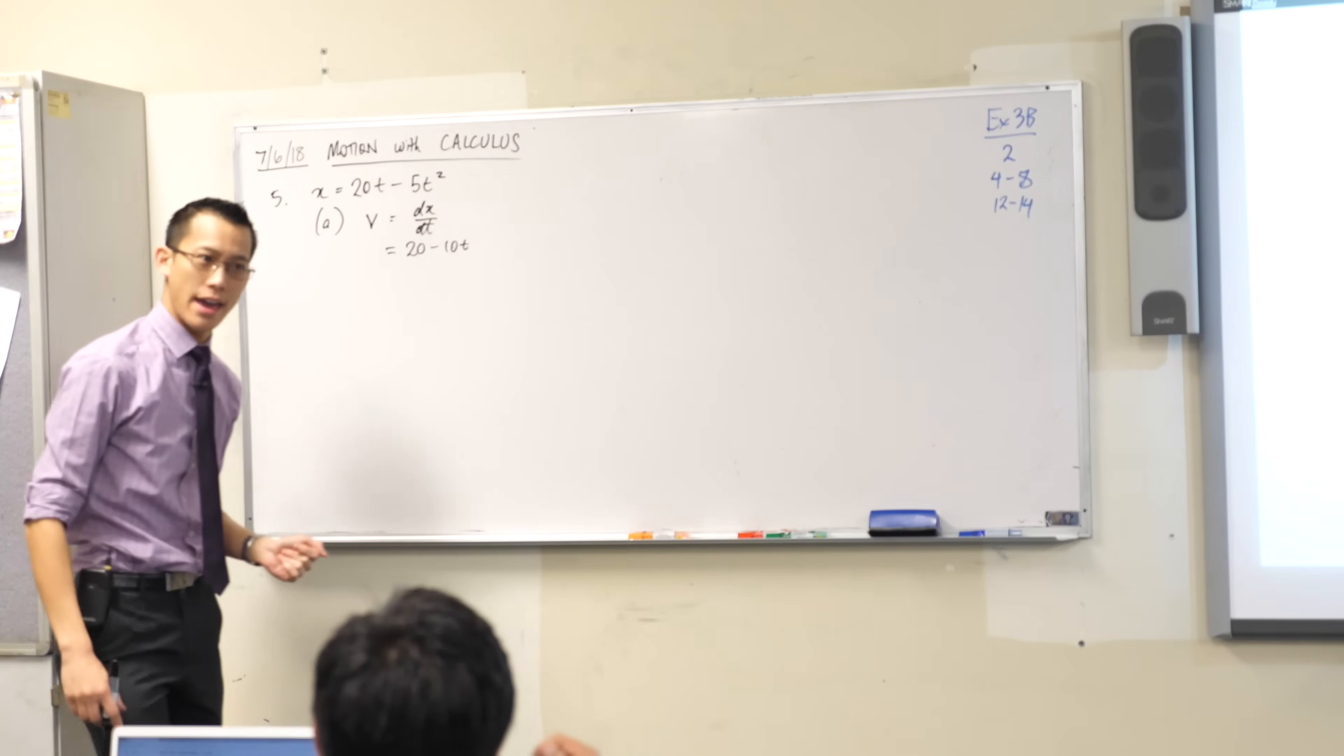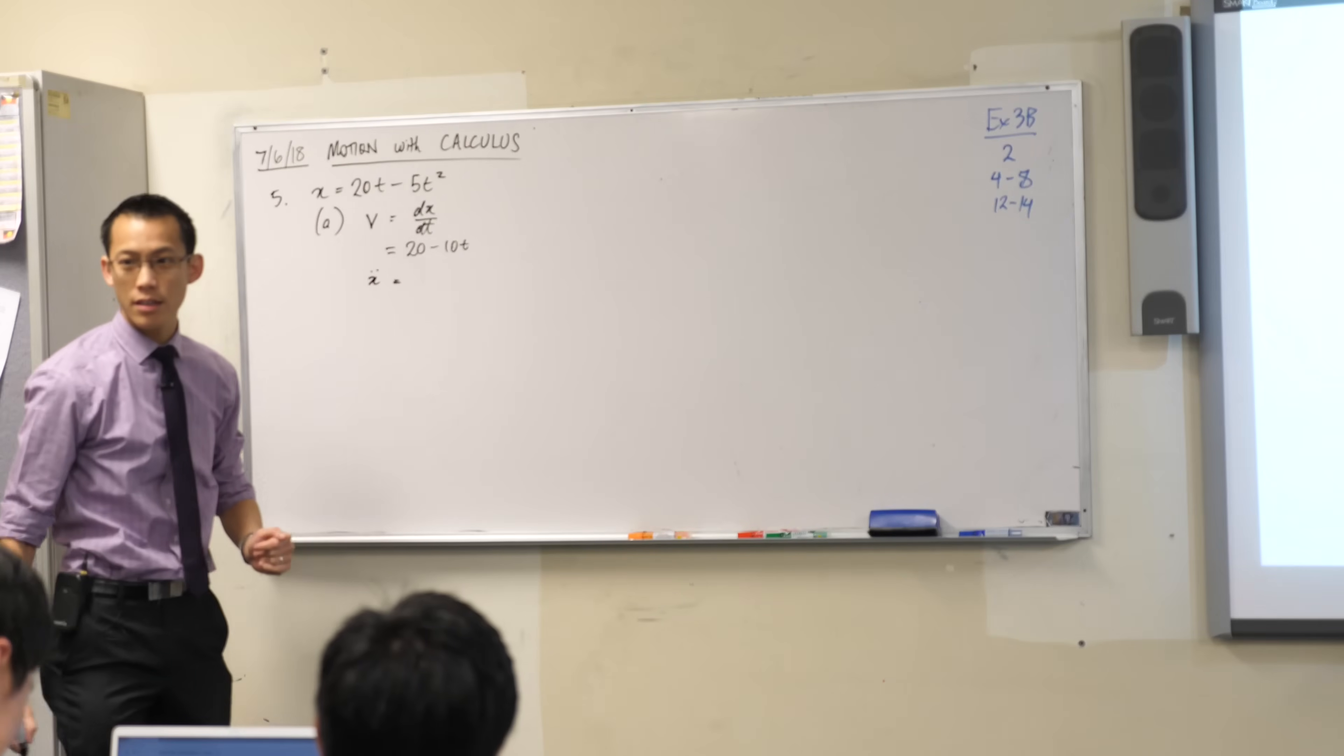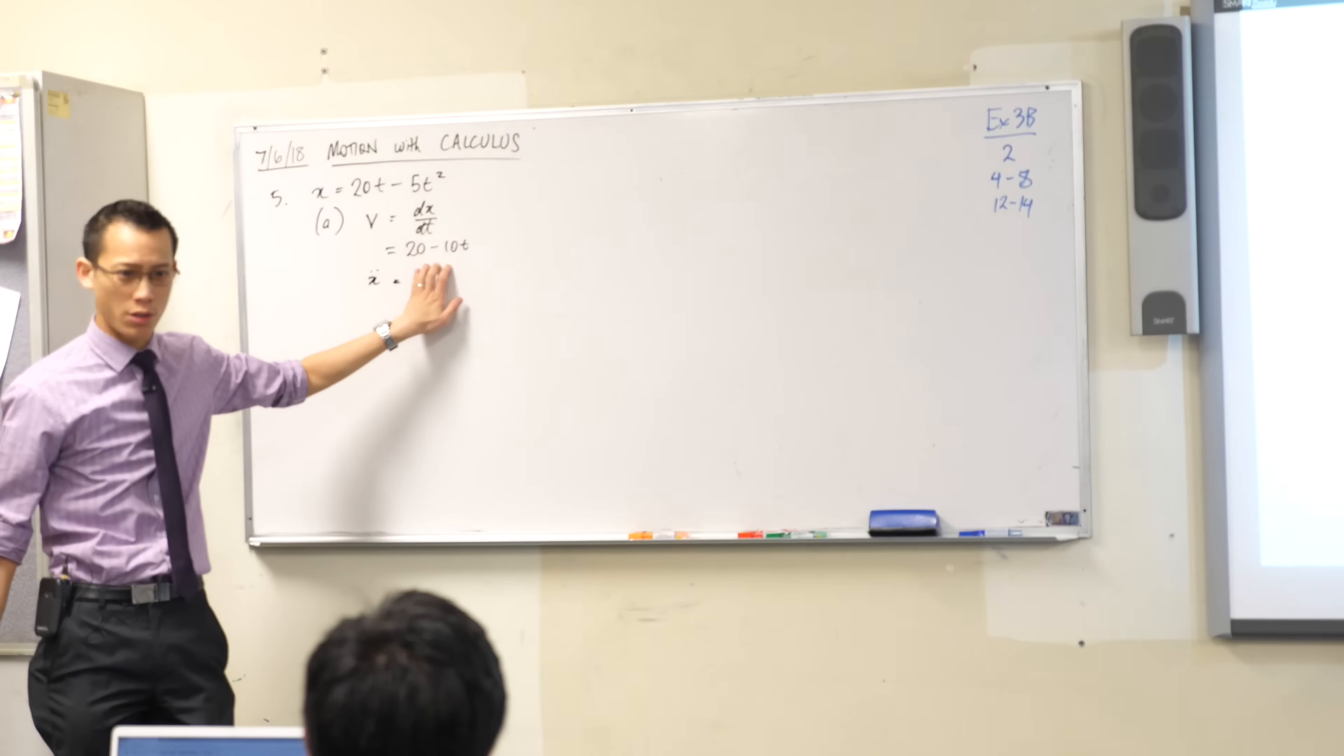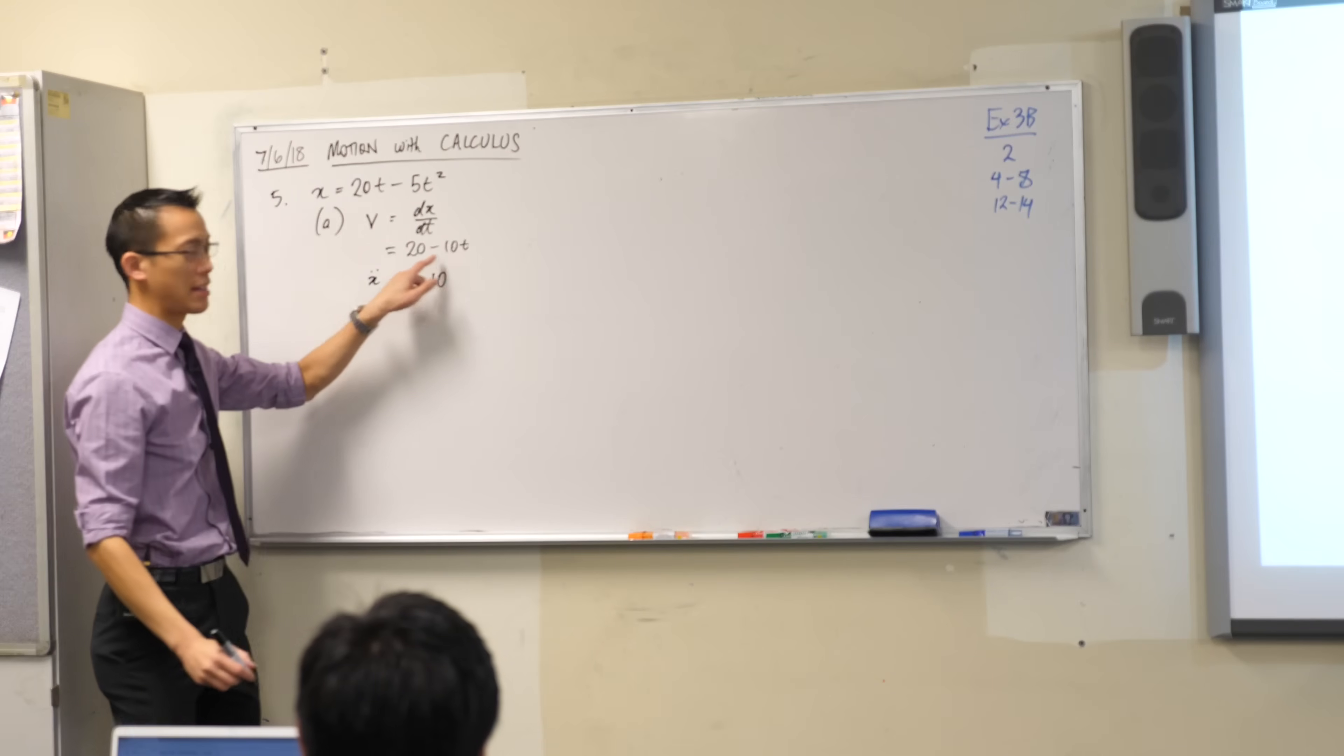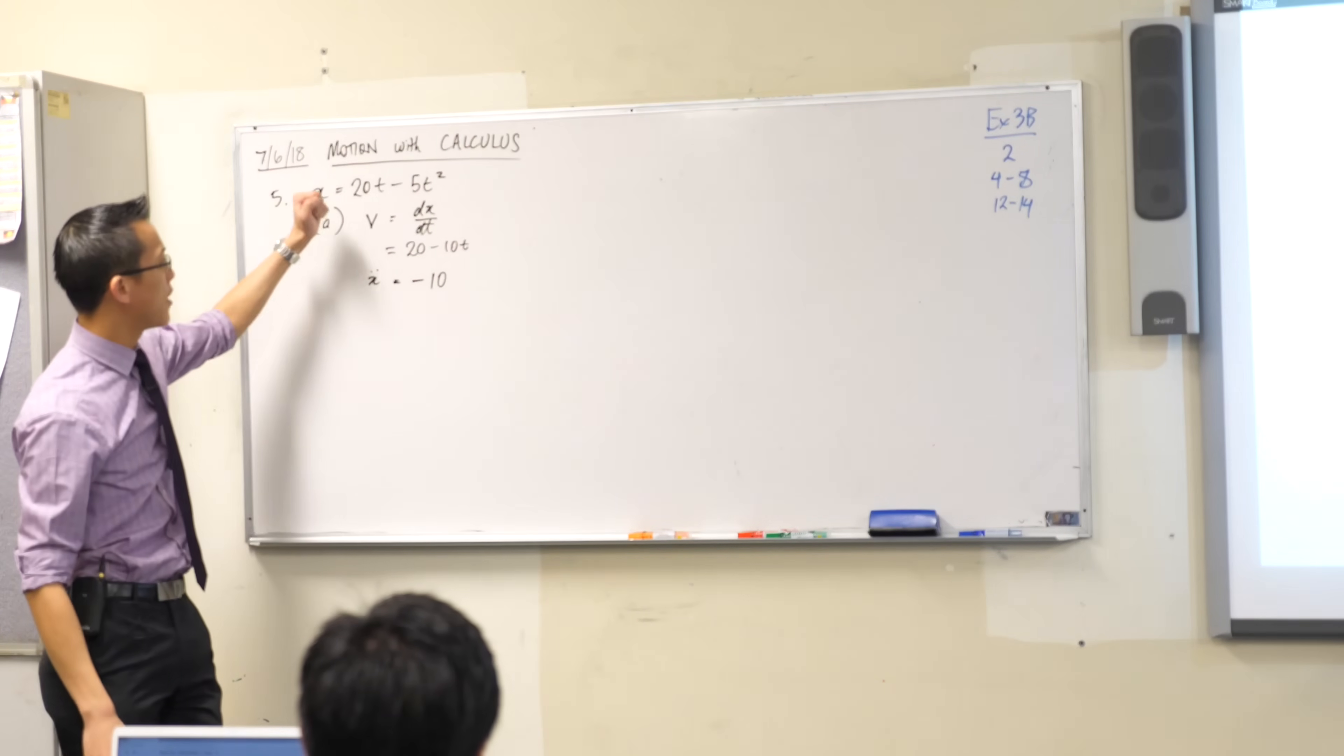They also ask us for x double dot. That is acceleration, which I get straight from this line, right? So can you tell me what the acceleration is? It's just, yeah, negative 10. 100% that 20 becomes irrelevant and that's what we've got. So I've found velocity. I found acceleration.